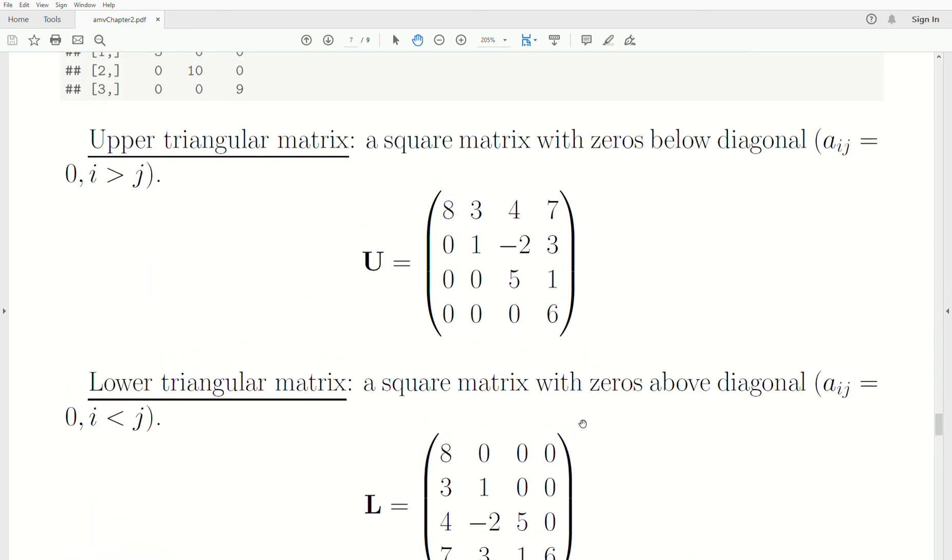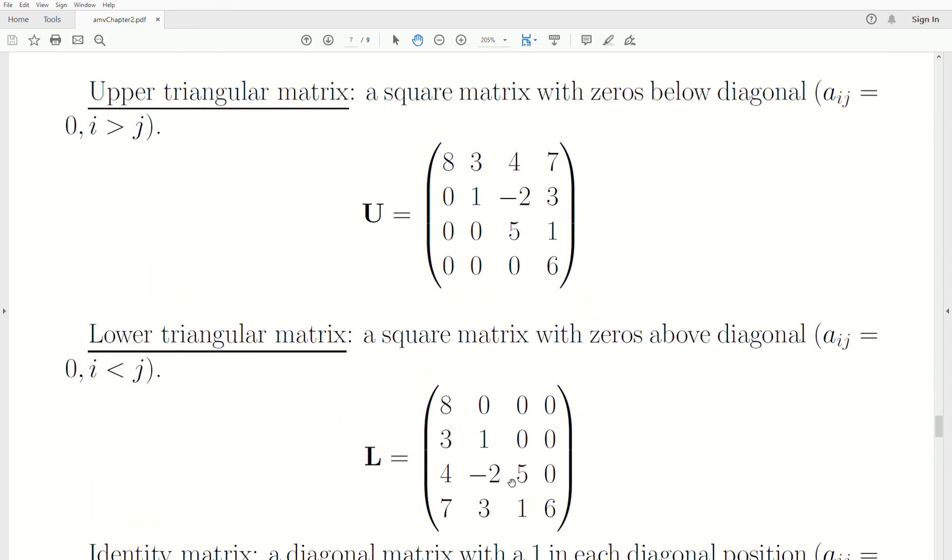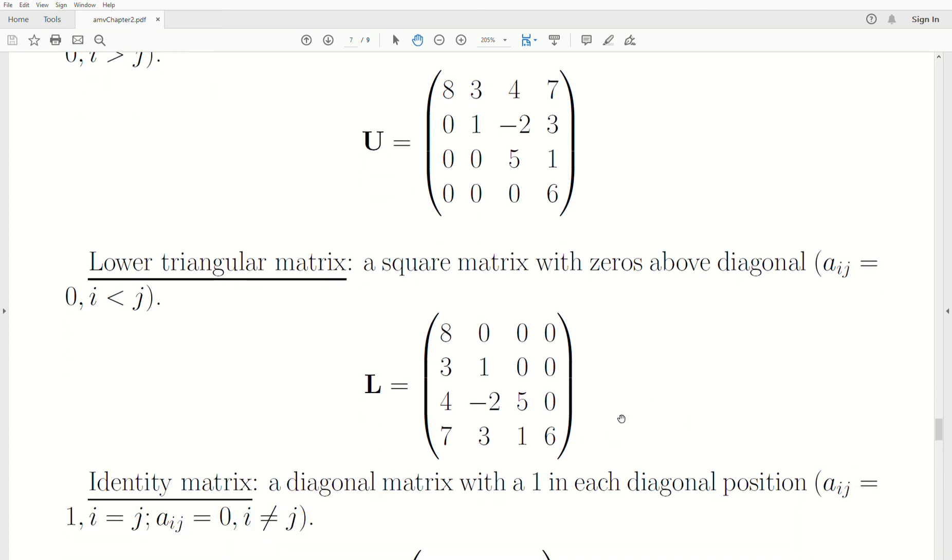A lower triangle is, I don't know if opposite is the right word, but the diagonal and below can be anything, but then the elements above the diagonal have to be zero. This is called a lower triangular matrix.